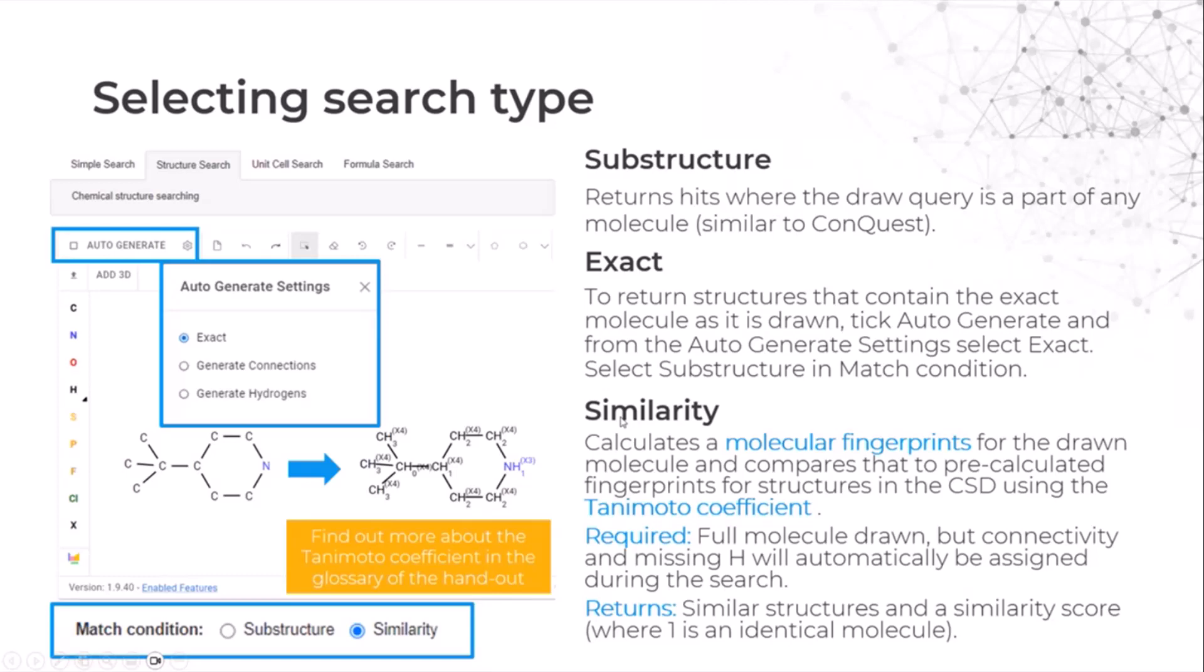If instead you want to run a similarity search, this calculates the molecular fingerprints for the drawn molecule and compares it to the pre-calculated fingerprints for structures in the CSD using the Tanimoto coefficient. If you want to learn more about this coefficient, you can find out more in the glossary in the handout in the U-try part. To run a similarity search, you need to have the full molecule drawn, but you do not need to draw all the hydrogens as they will be automatically assigned during the search. As an output, you will have similar structures and a similarity score.